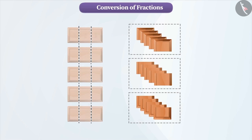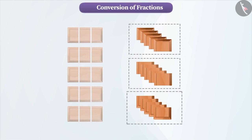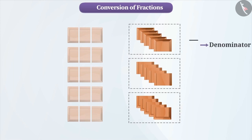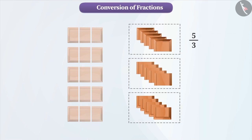Since we have divided each chocolate into 3 equal parts, the denominator will be 3, and since we have taken 5 parts, the numerator will be 5. Therefore, each part has 5 by 3 chocolates. This is an improper fraction.